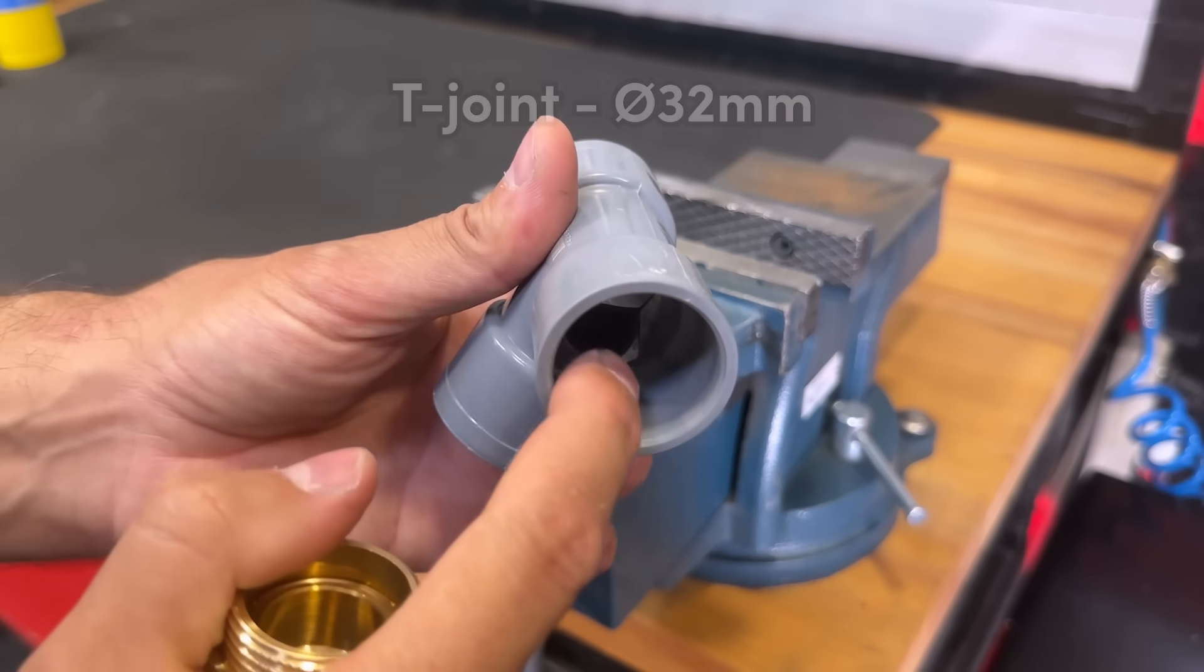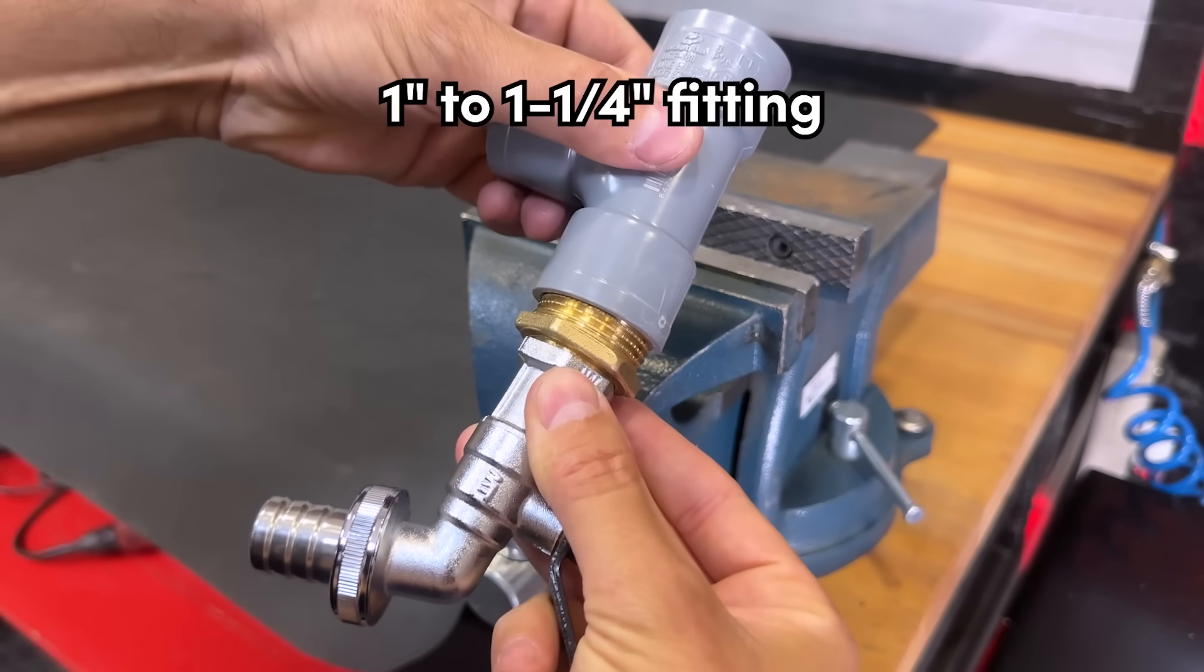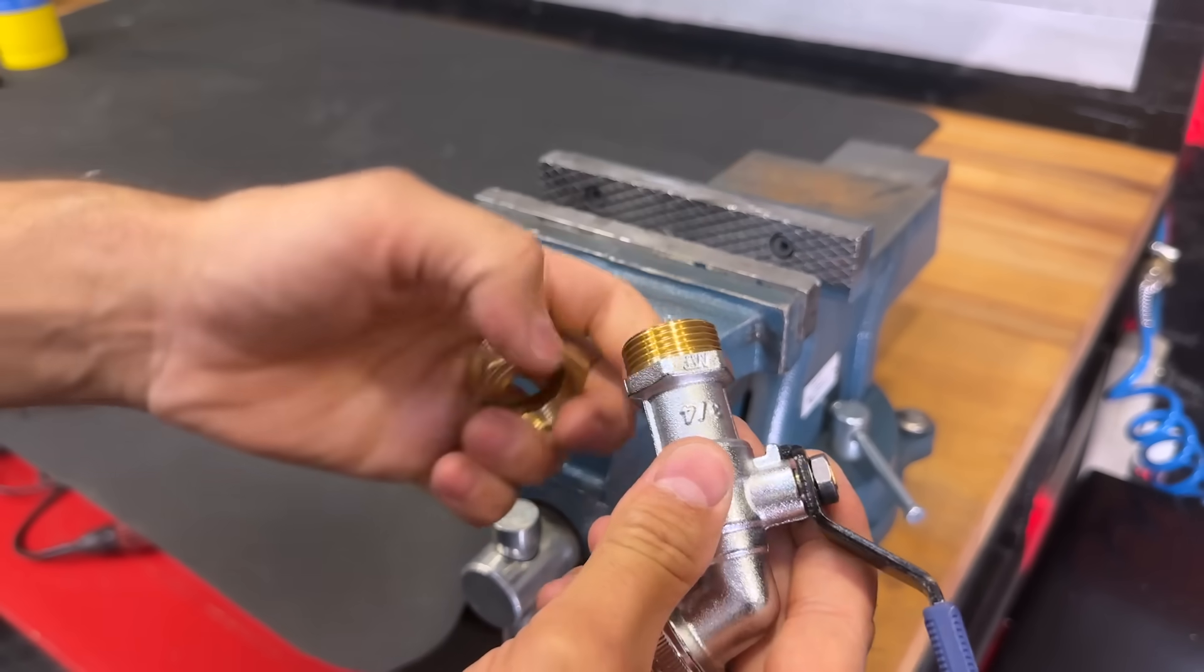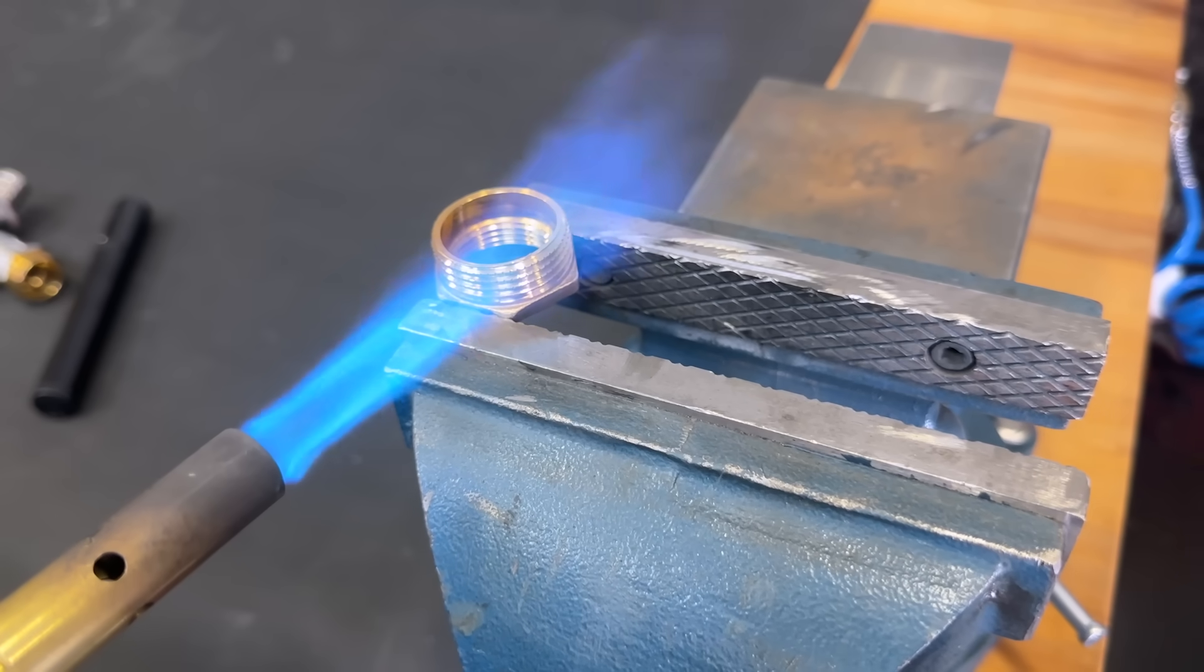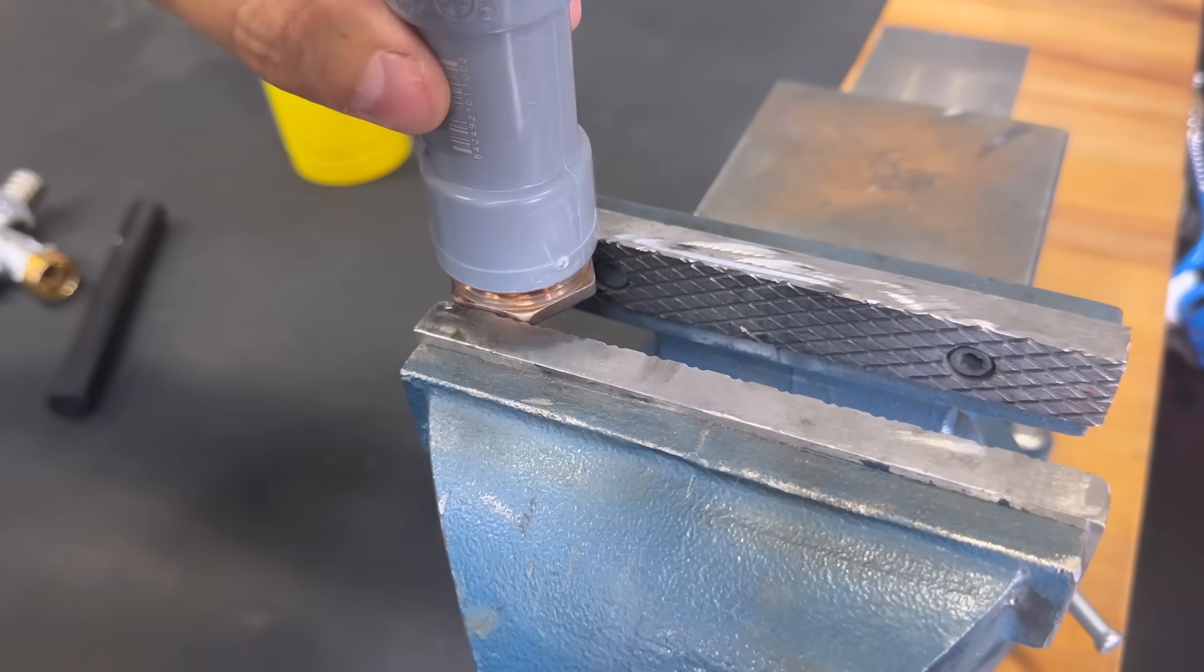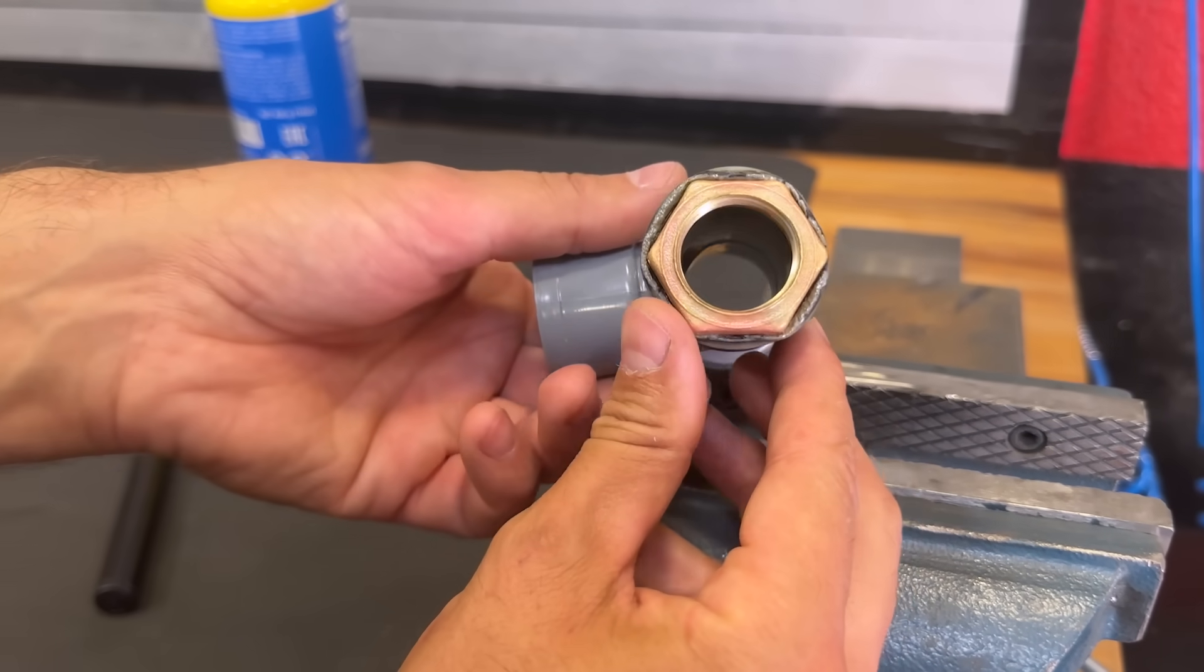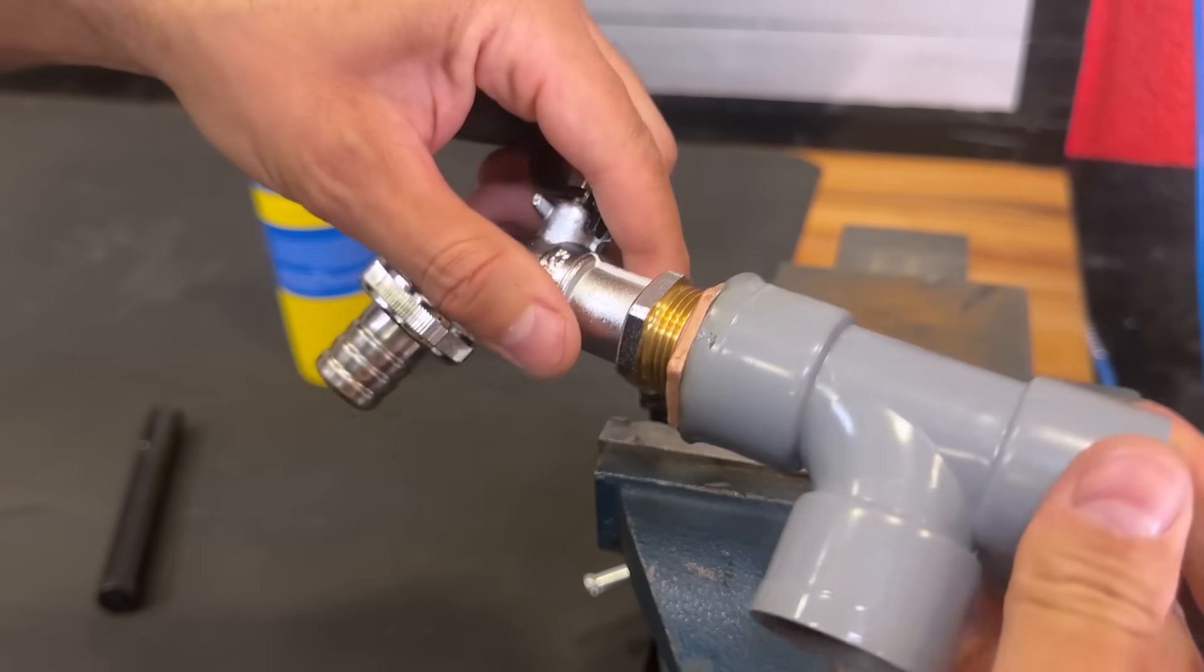Here we have a 32 millimeter diameter PVC T and we want to attach this one and a quarter inch fitting. Since it doesn't have a thread, we'll heat the fitting with a blowtorch. Once it's heated, we insert it into the PVC coupling. Once it melts, it is completely glued and sealed. And now we can screw in our faucet.